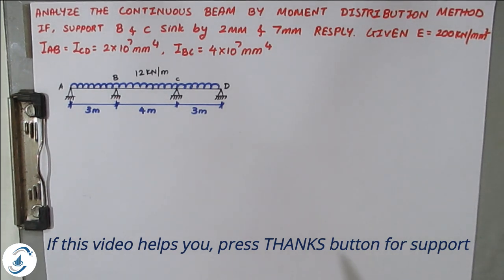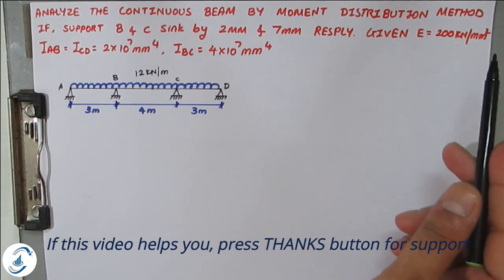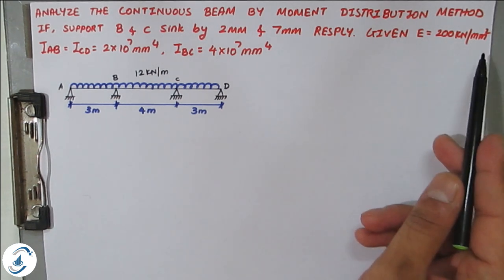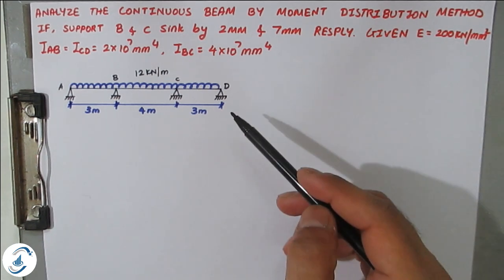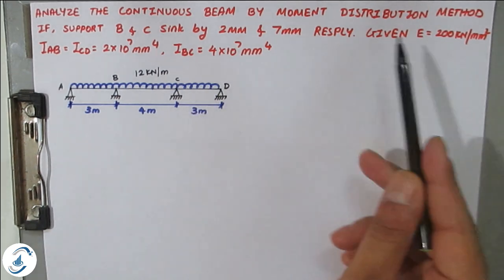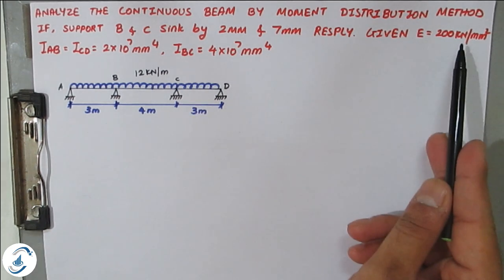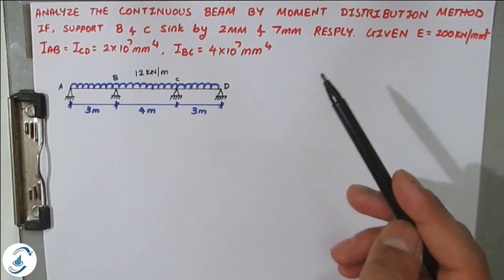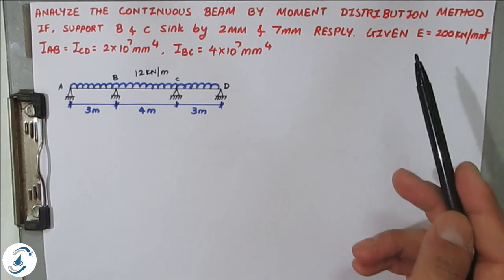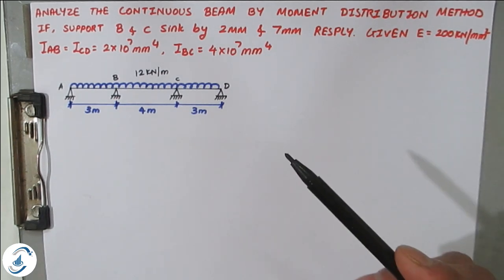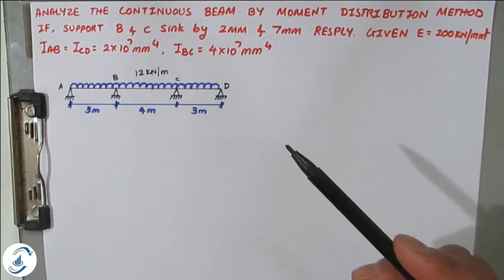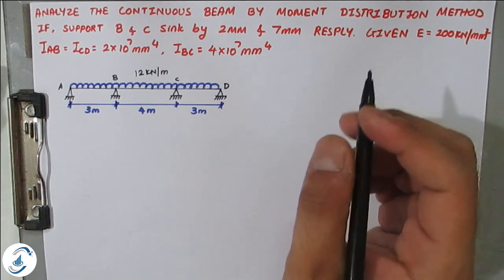Before finding out fixed end moments, we shall convert E and I values because they are given in millimeters whereas our span is in meters. The load is already in kilonewtons so no conversion is needed for that. We will start the conversion process before moving on to the fixed end moments.